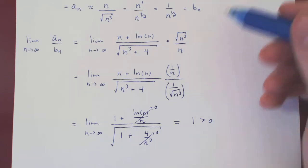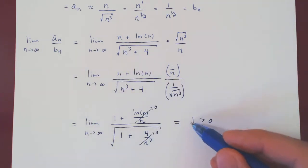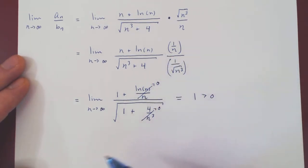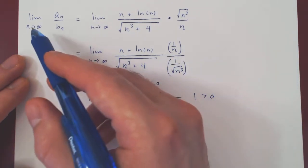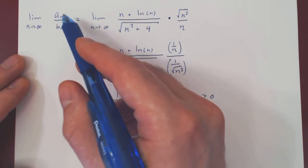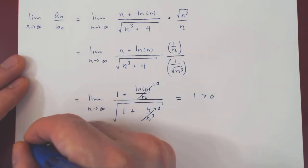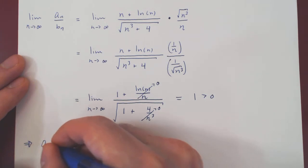And so, our limit is a positive real number. So, we're good to go. Again, looking at the intuition, we're saying when n is very large, an over bn is very close to 1. And so, when n is large, an is roughly bn.